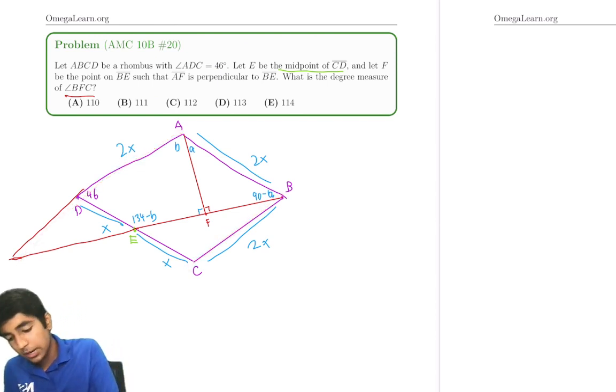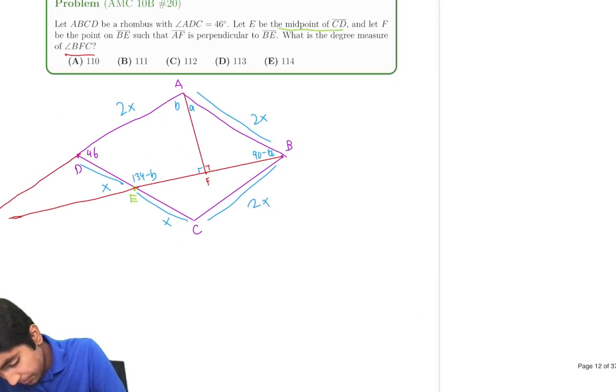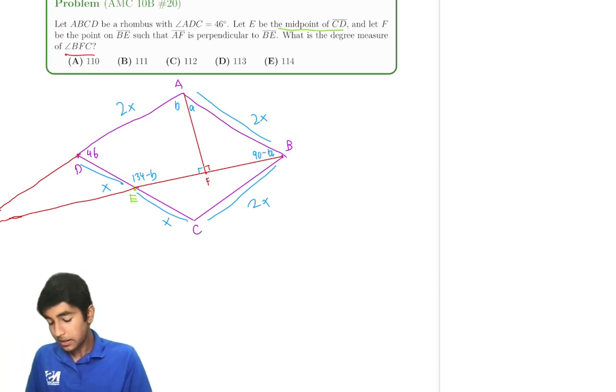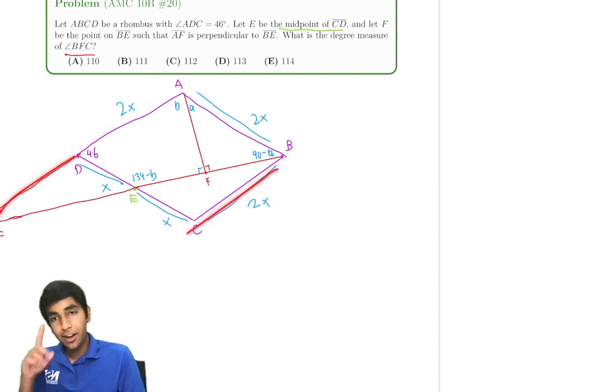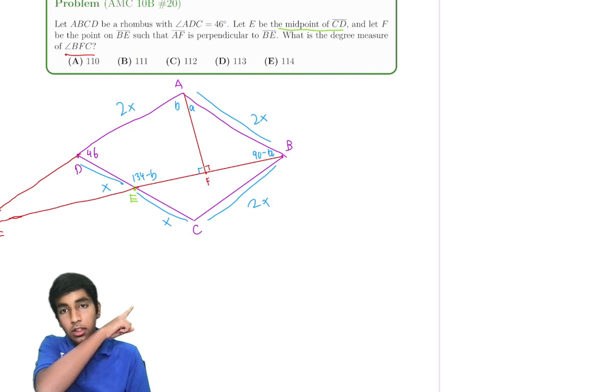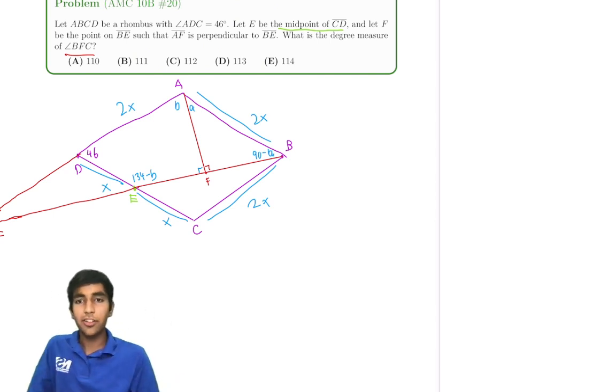I mean, after all, all we did was extend this line. And then it meets at some kind of point here. Let's just call this point G so it's easier to refer to. So the key thing here is that because these two lines are parallel, this part is also parallel to this part. Parallel lines mean similar or congruent triangles typically.